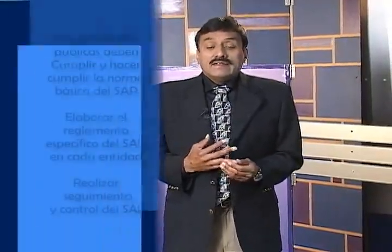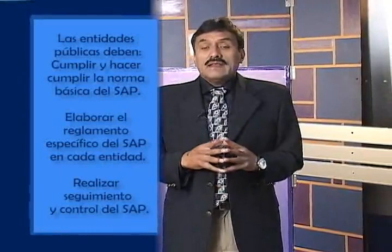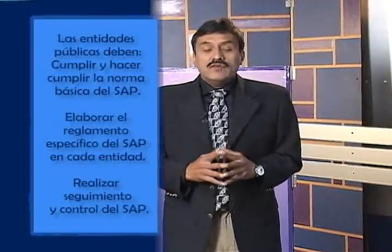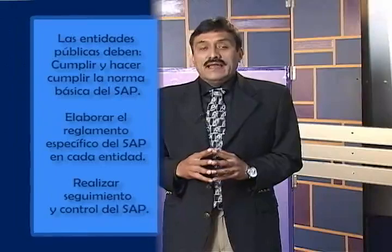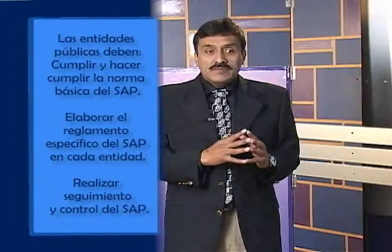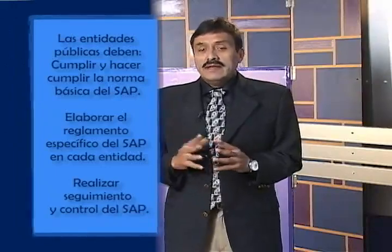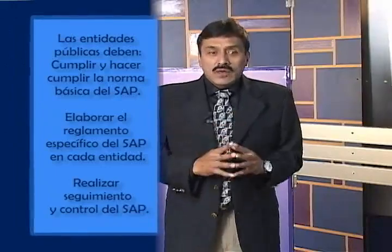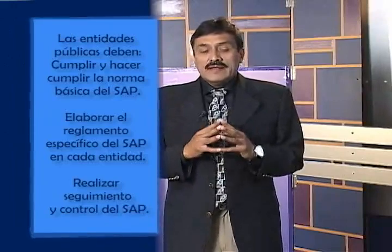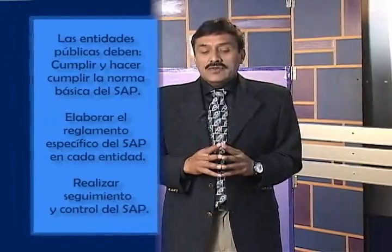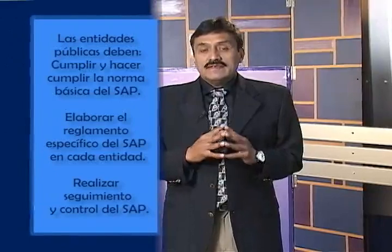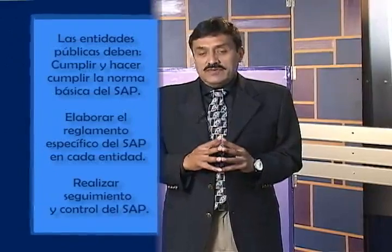¿Cuál es el nivel ejecutivo y operativo del SAP? Las entidades públicas tienen las siguientes atribuciones: cumplir y hacer cumplir la norma básica del sistema de administración de personal, elaborar el reglamento específico del sistema de administración de personal de acuerdo a las características propias de cada entidad, y realizar seguimiento y control del funcionamiento del sistema de administración de personal.